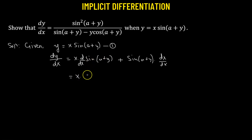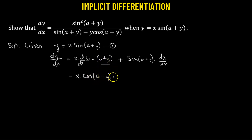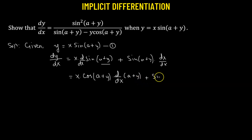The derivative of a sine function is cosine. Since we have sine(a + y), the derivative becomes cosine(a + y). But because of the composite function a + y, we also need to use the chain rule and multiply by the derivative of (a + y) with respect to x, plus sine(a + y). The derivative of x with respect to x is one.